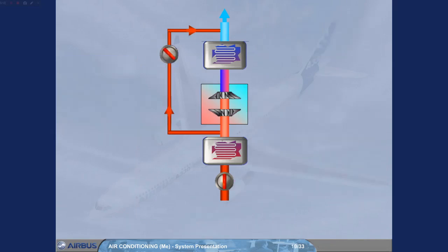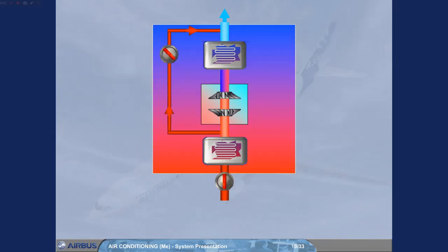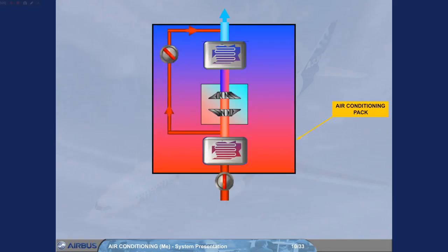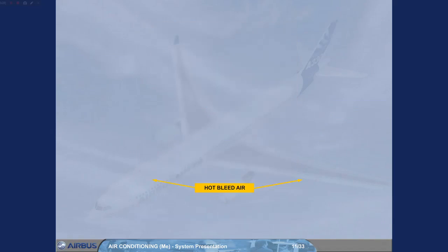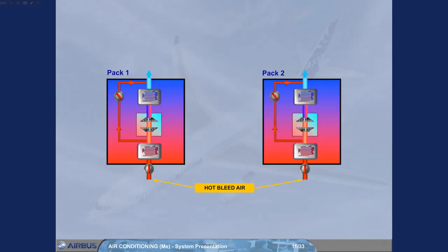To make things simpler, let's define the area within the black box as a pack. The two air conditioning packs operate automatically and independently to provide cool, conditioned air.